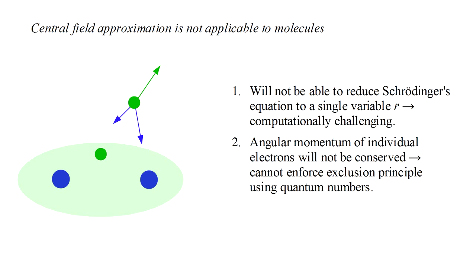Moreover, in a non-central field, the angular momentum of individual electrons will not be conserved. Without angular momentum quantum numbers, we cannot enforce the exclusion principle by simply assigning different quantum numbers to different electrons. This is a fundamental issue that we need to resolve before we can move forward.